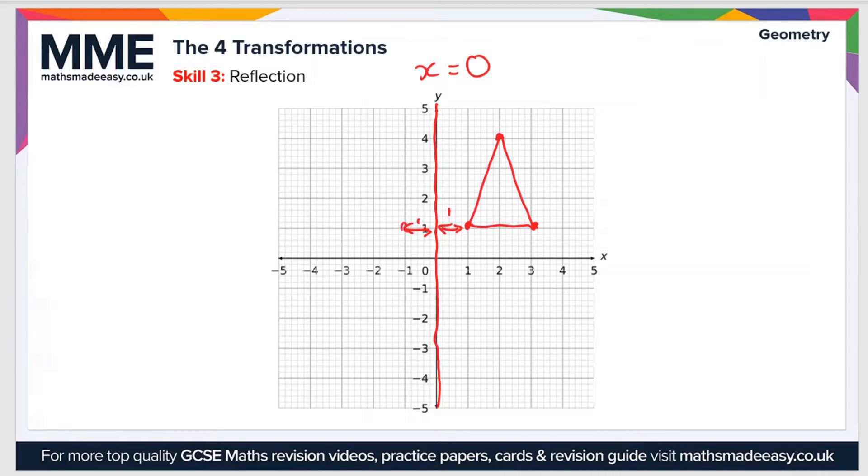I'll use a different color now. This point here is a distance of three squares away, so we'll go a distance of three squares in this direction. That gives us a second point. Then this point here at the top is two squares away, so we'll go two squares in this direction. That's our final point.